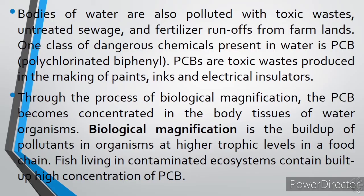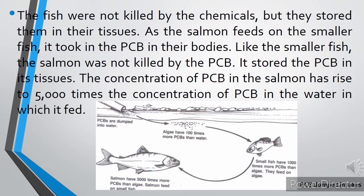One class of dangerous chemicals present in water is PCB, or polychlorinated biphenyl. PCBs are toxic waste produced in the making of paints, inks, and electrical insulators. Through the process of biological magnification, PCBs become concentrated in the body tissues of water organisms. Biological magnification is the build-up of pollutants in organisms at higher trophic levels in a food chain. Fish living in contaminated ecosystems contain high concentrations of PCB. The fish were not killed by the chemicals but stored them in their tissues. As salmon feed on smaller fish, they take in the PCB, and the concentration of PCB in the salmon can rise to 5,000 times the concentration in the water.